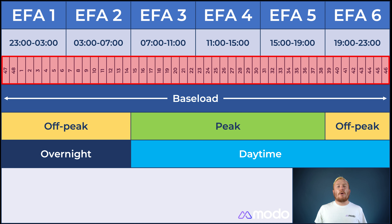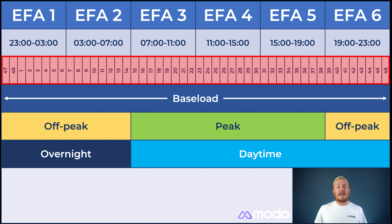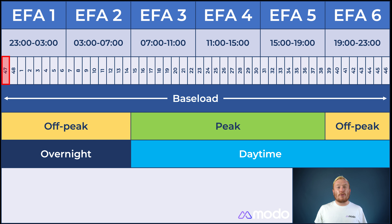On top of this, the day is split up into 48 half-hour settlement periods. As the IFA day begins at 11pm, the first settlement period of IFA block 1 is actually period 47, whilst settlement period 1 runs from midnight until 12:30am.